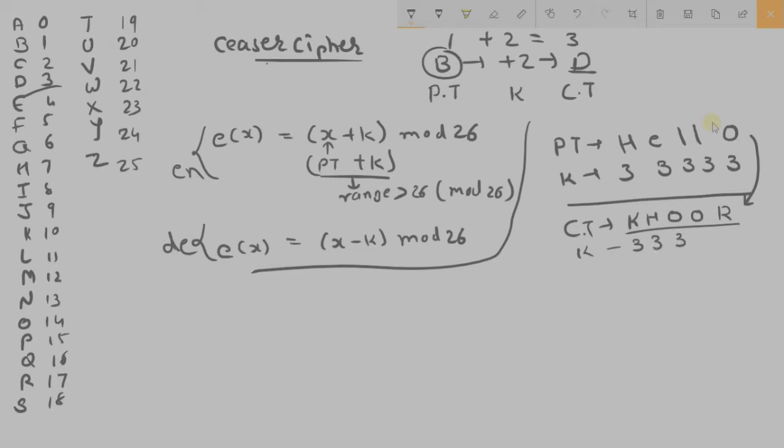So K minus 3, H minus 3, O minus 3, R minus 3. So K, K is 10, minus 3, 7. So we get H.